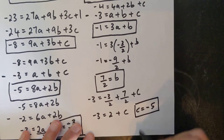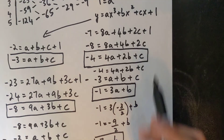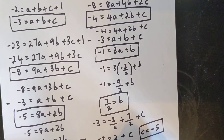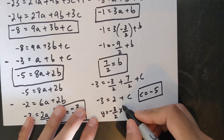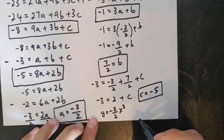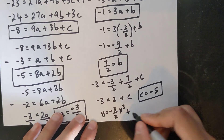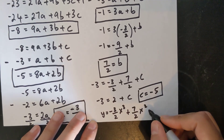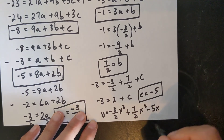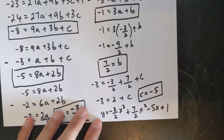Now that I've found a, b, and c, I can write the final equation: y = −(3/2)x³ + (7/2)x² − 5x + 1. Those are my values for a, b, c, and d.